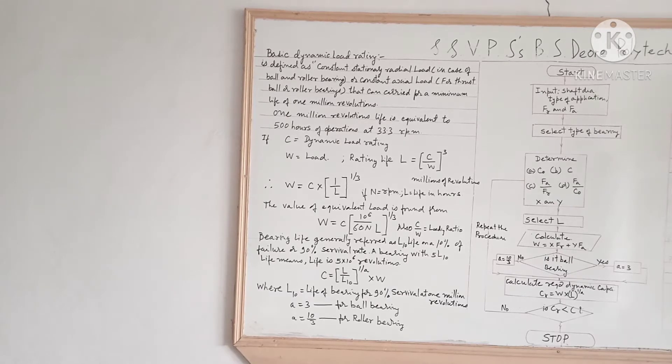The dynamic load carrying capacity is based on the assumptions that the inner race is rotating while the outer race is stationary. When the bearing starts rotating, the load is more evenly distributed amongst the balls and races, thereby sustaining more permanent deformation than in static conditions. The dynamic capacity of bearing is based on the fatigue life of the material.